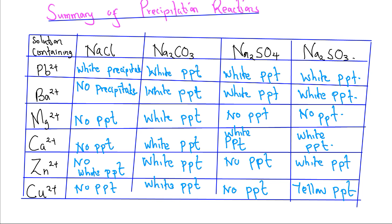We can see from the above that soluble salts can be used to precipitate insoluble salts. In our table we have seen how exchange of ions takes place and results in the formation of precipitates. However, there are some cases where there is formation of a colorless solution instead.